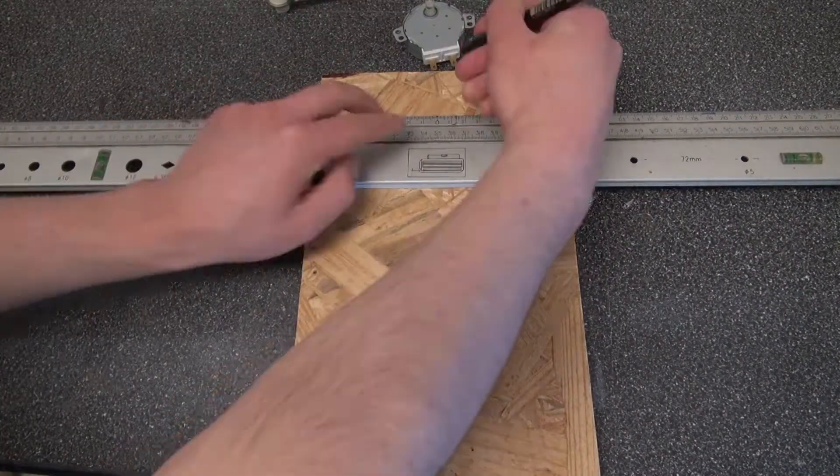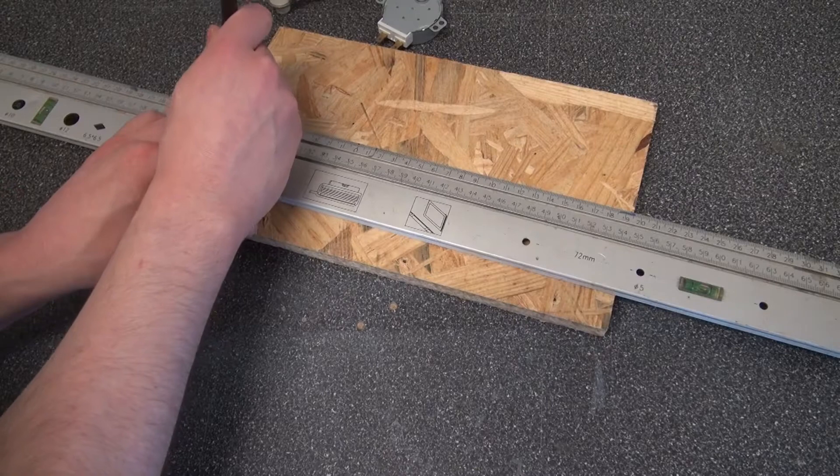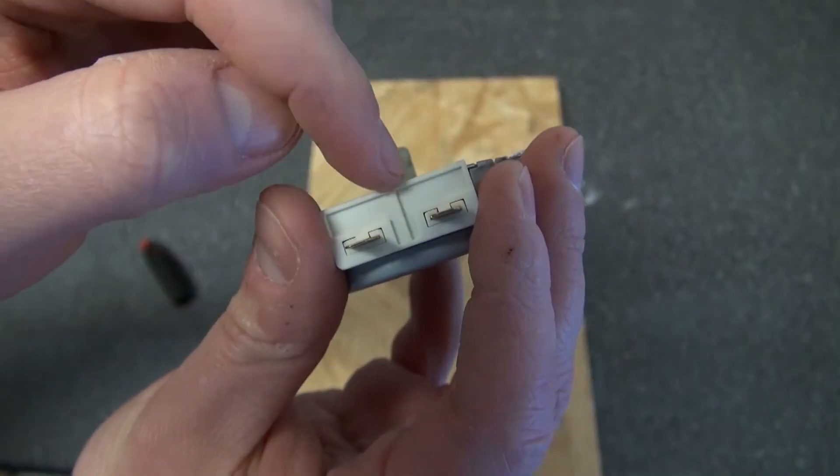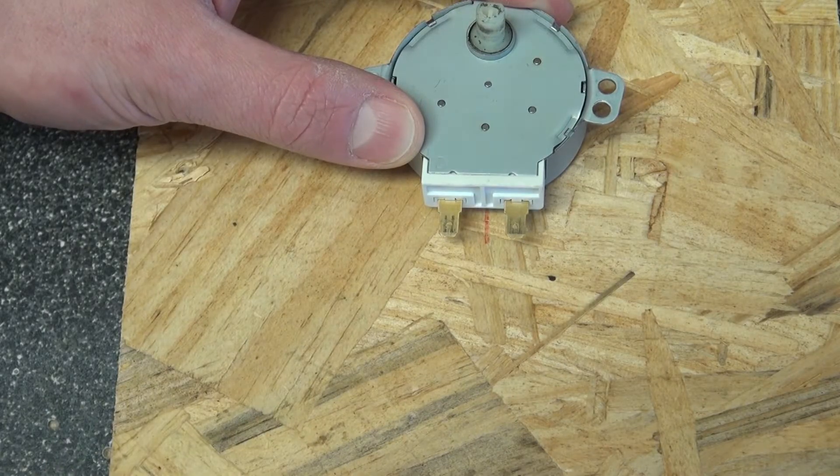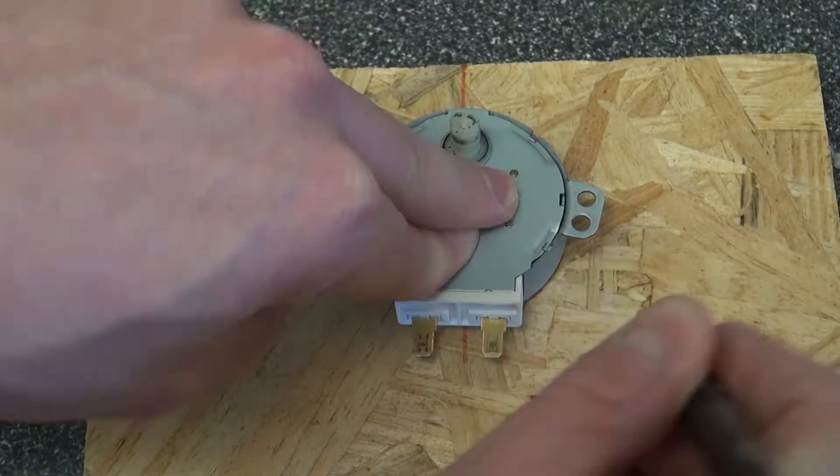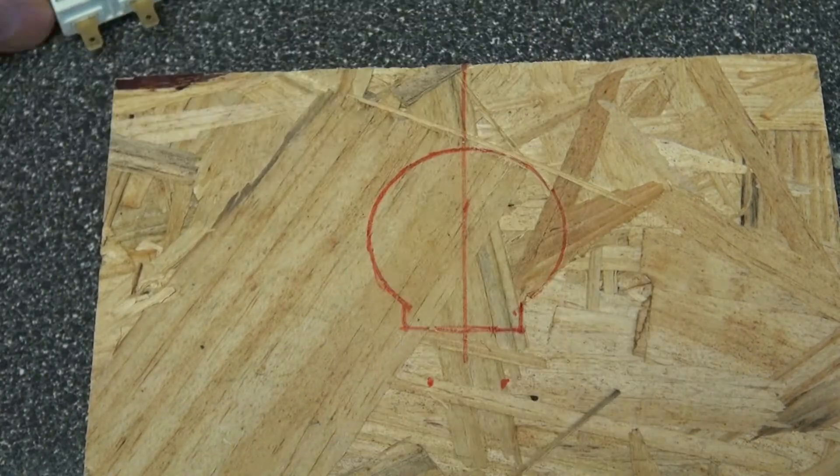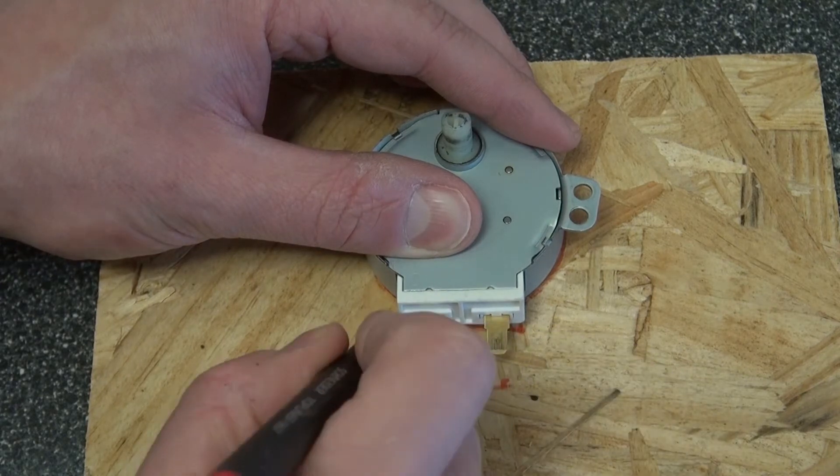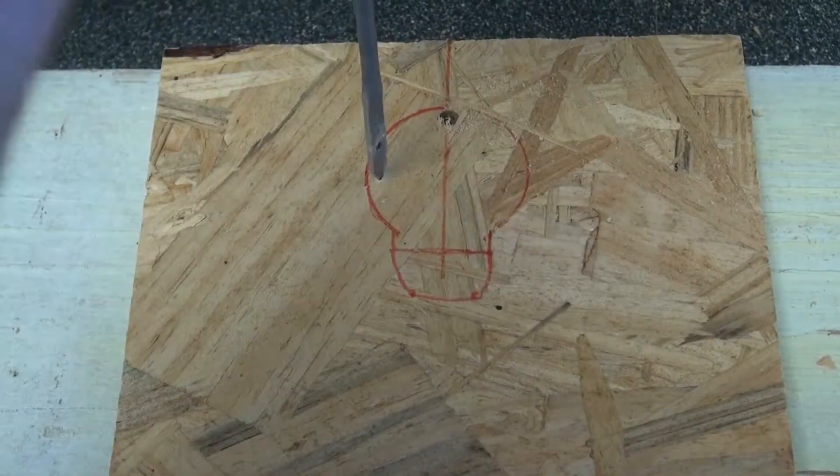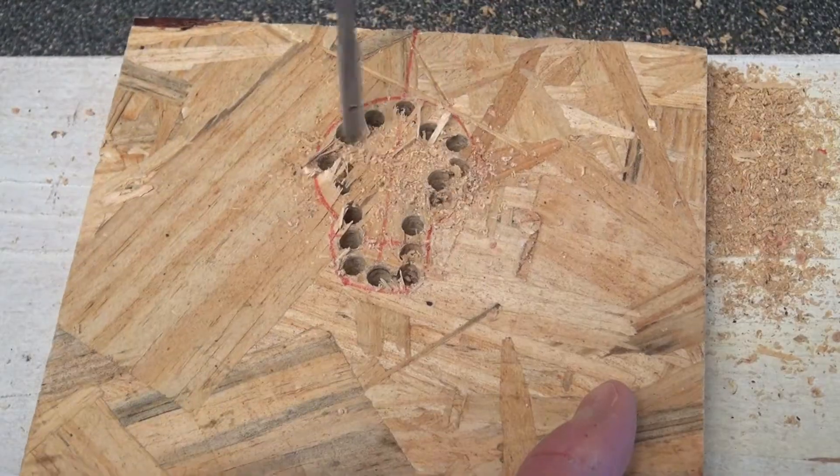So I'm going to measure the center of this board right here. Okay so my center is right there and I want to put my microwave motor right there and follow that line which is the center. So now I'm going to trace around it. There we go. I'm going to attempt to carve out that piece so I can place the microwave motor in its place.